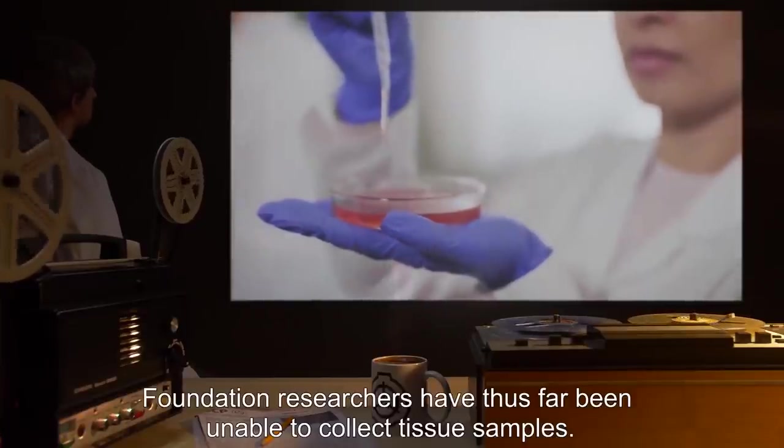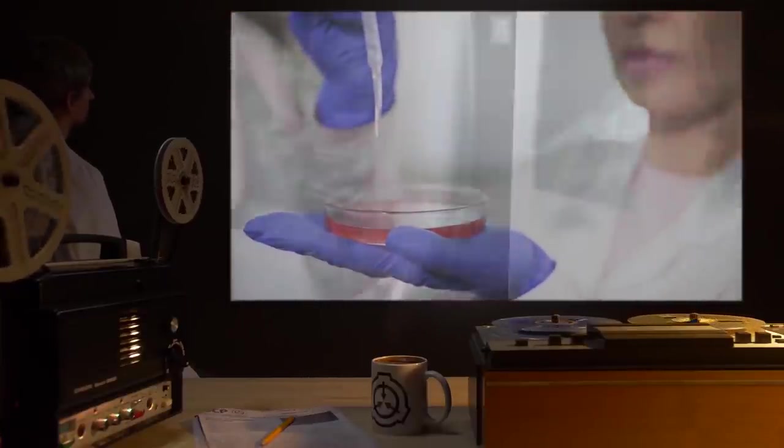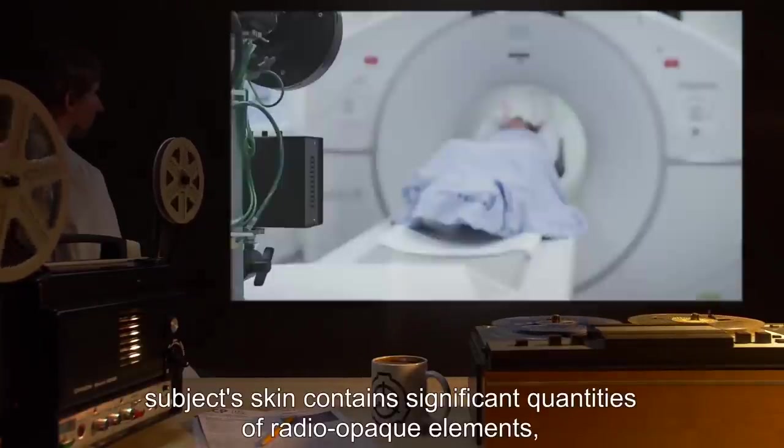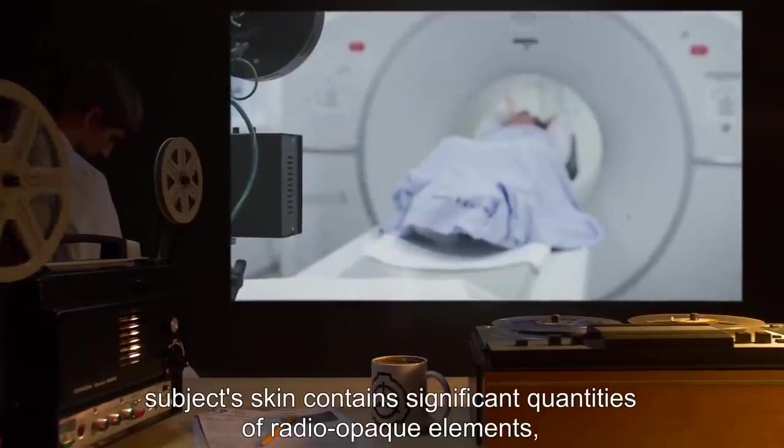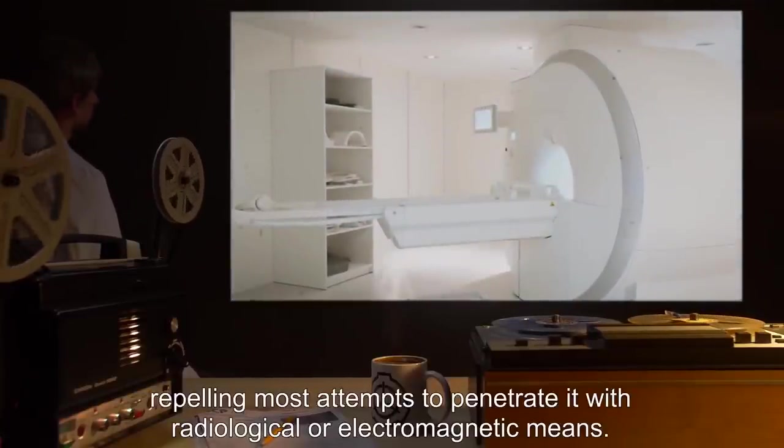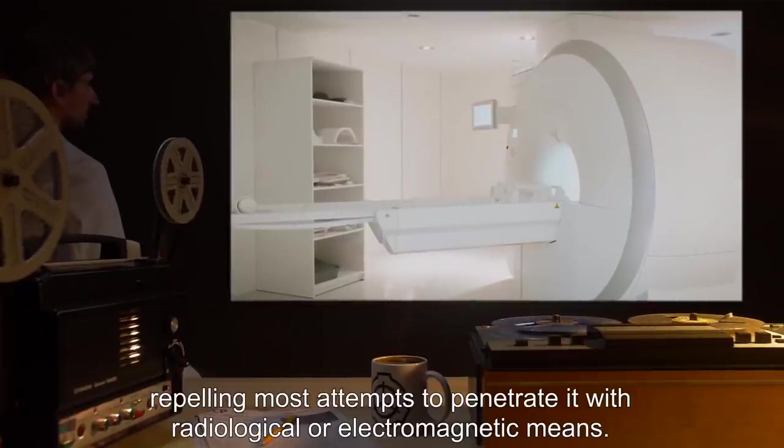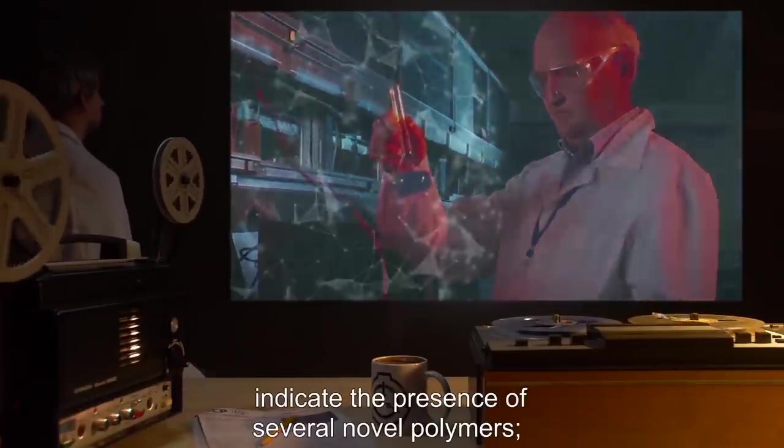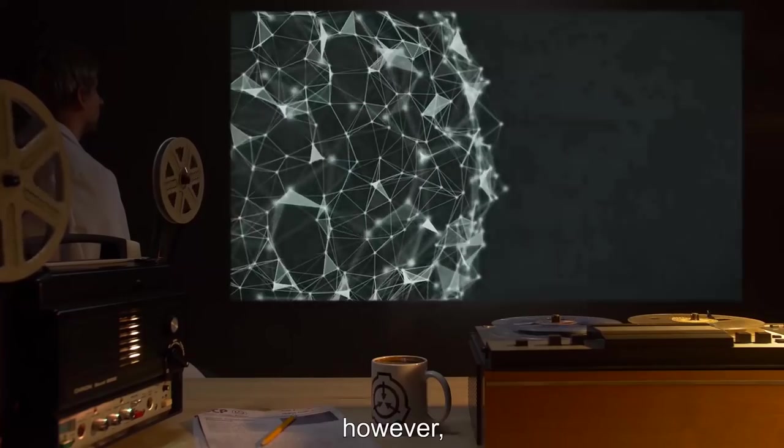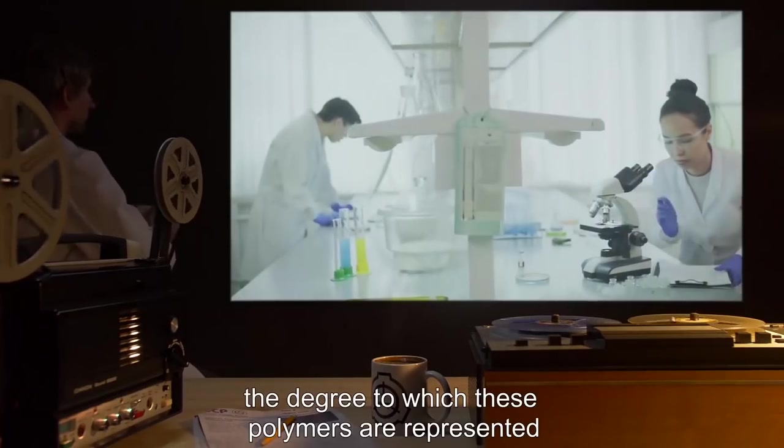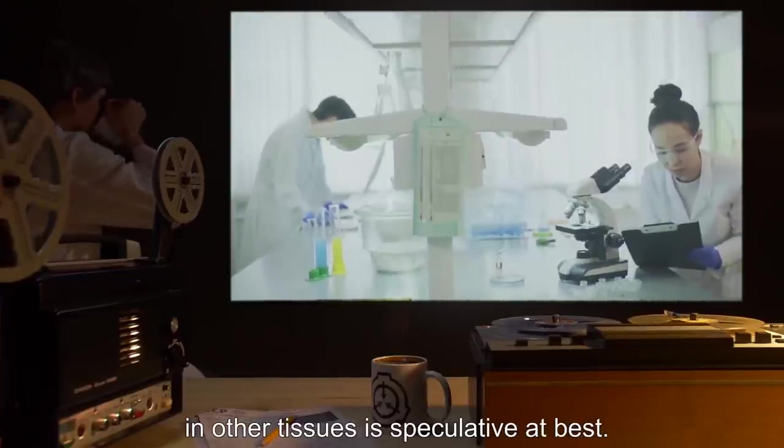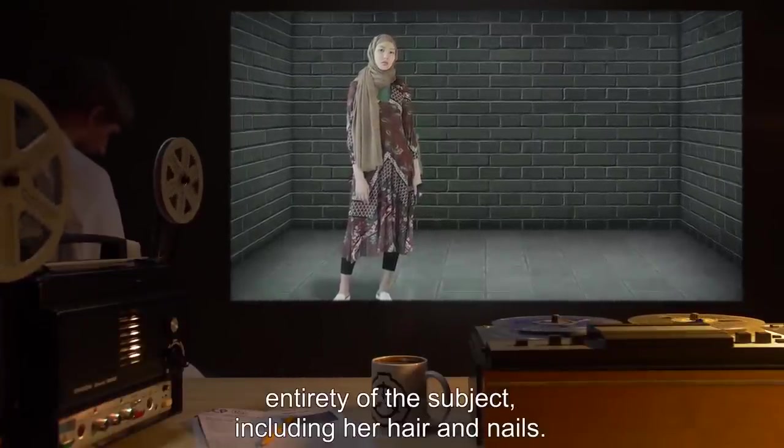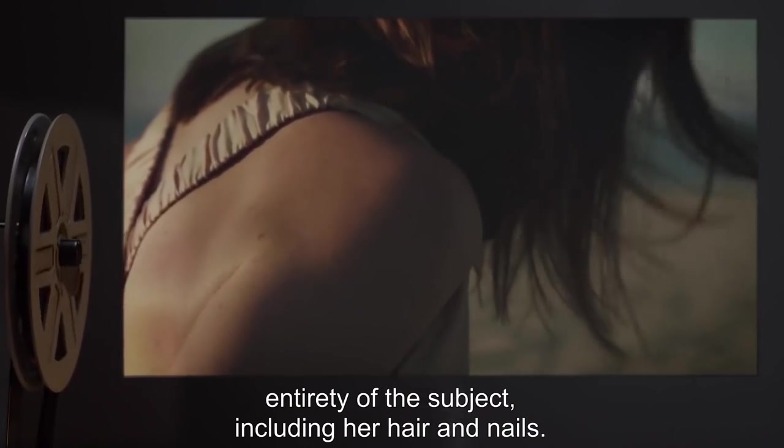Foundation researchers have thus far been unable to collect tissue samples. Attempts have been made to X-ray the subject, but results were inconclusive. Subject's skin contains significant quantities of radio-opaque elements, repelling most attempts to penetrate it with radiological or electromagnetic means. Diffractometry tests upon cell samples extracted from urine, feces, and menses indicate the presence of several novel polymers; however, the degree to which these polymers are represented in other tissues is speculative at best.